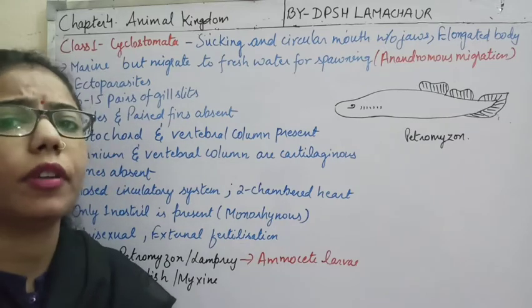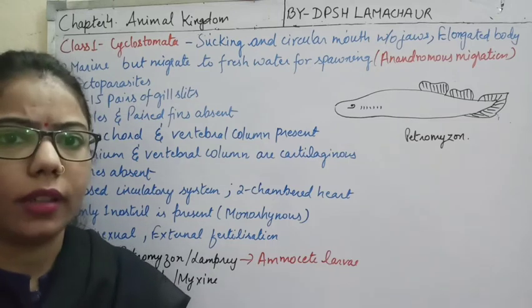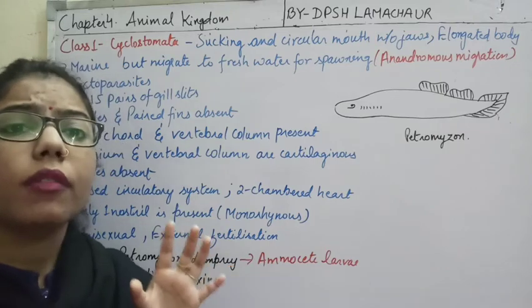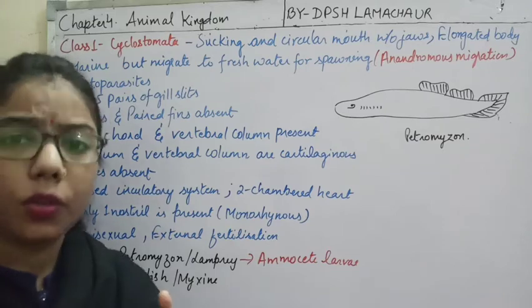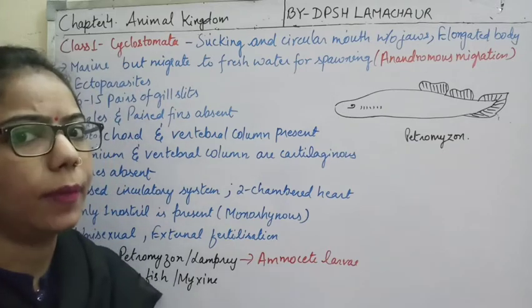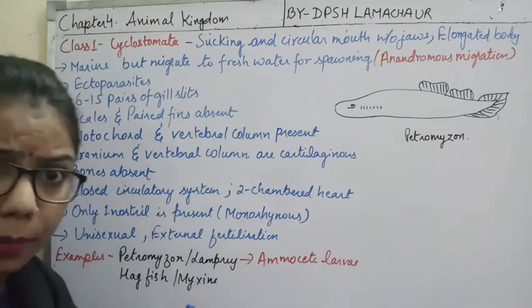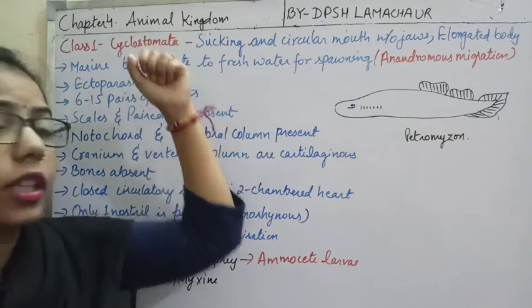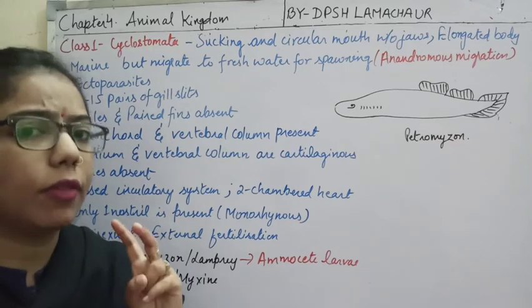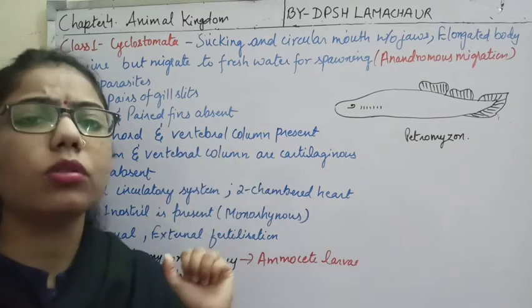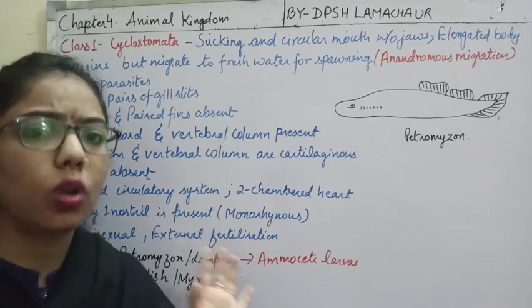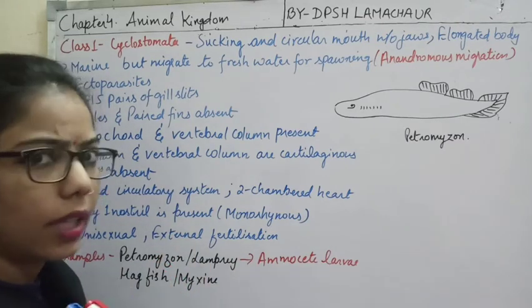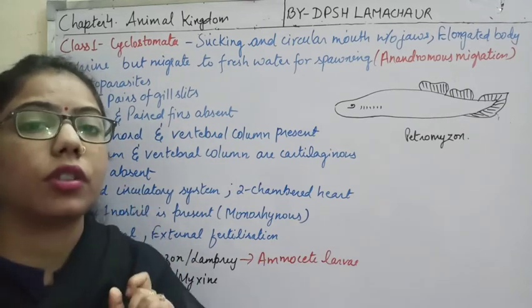In case of Acraniata, we have divided it into two: Urochordata and Cephalochordata. The third one was Craniata, which we placed under Vertebrata. So total groups are: Urochordata, Cephalochordata, and Vertebrata. Vertebrata was further divided into Agnatha and Gnathostomata. Agnatha means animals having no jaws — 'a' means absent, 'gnatha' means jaws. Gnathostomata animals are jaw-bearing. We will start with the first division, Agnatha.